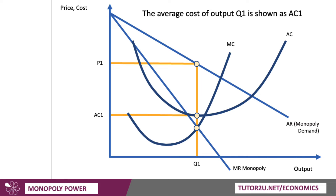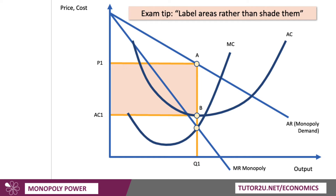Now the average cost of output Q1 — you'll use the average cost curve for that. So let's show average cost as AC1. You can see that the monopoly is charging a price well above unit cost, and that gives a high level of monopoly profit, equal to the area P1, A, B, AC1. Label areas rather than shade them — I've shaded the diagram here just for illustration. In the exam, label areas; it's much easier to reference those labelled sections in the text of your answer.